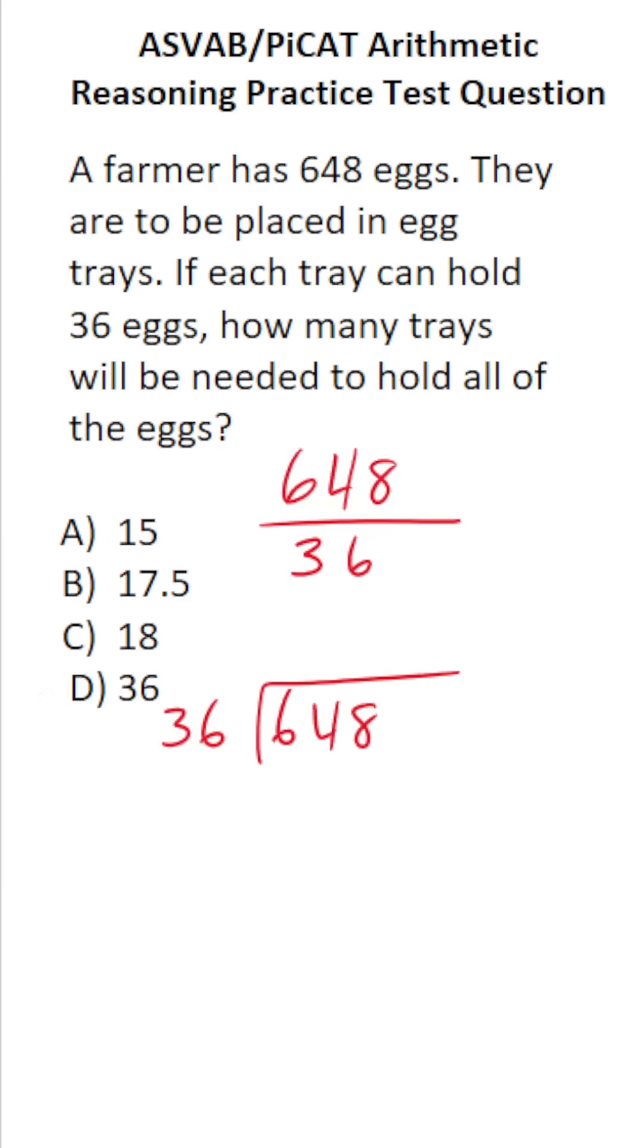Now we're asking ourselves, how many times does 36 go into 6 without going over? It doesn't. How many times does 36 go into 64 without going over? It's helpful to look at your answer choices. Three of them start with 1 and one starts with 3. This has to be 1, and we know this is not a correct answer. So 36 times 1 is 36. 64 minus 36. 4 minus 6 we can't do without borrowing. This becomes 5, this becomes 14. 14 minus 6 is 8. 5 minus 3 is 2, and we have to drop down this 8.